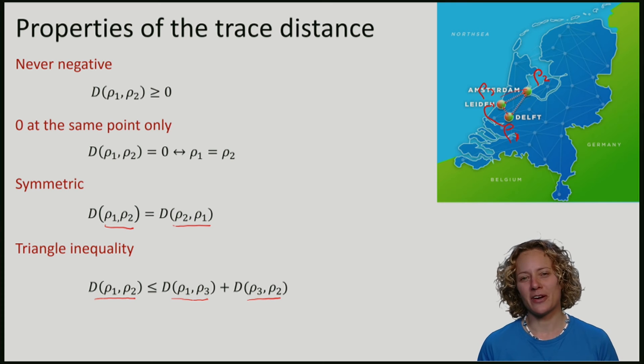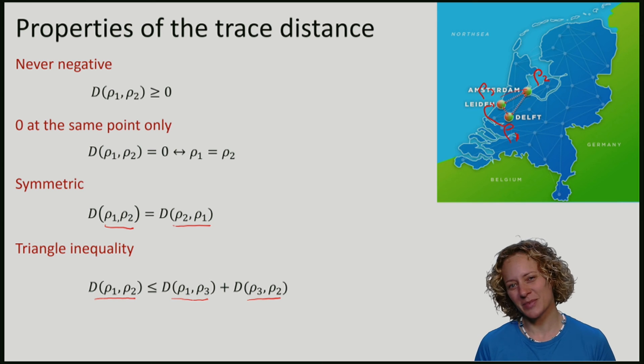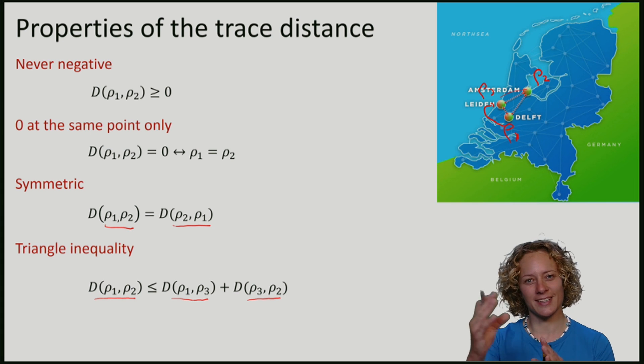We've seen now a very important measure, the trace distance, and it quantifies what it means to be almost ignorant. We can consider the trace distance to the perfect ideal case where Eve is ignorant.